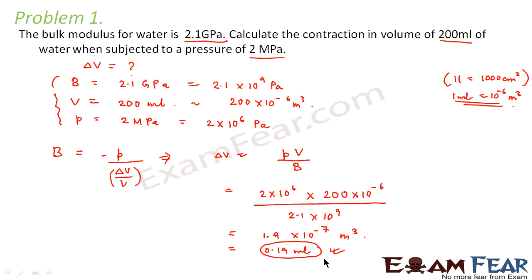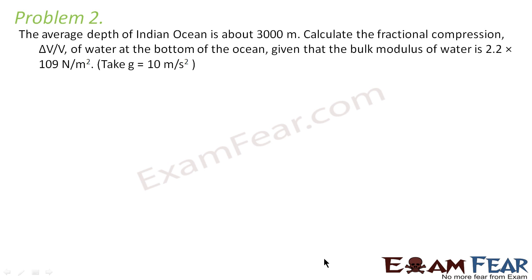You should have basic knowledge of unit conversion — for example, how gigapascal relates to pascal, how megapascal relates to pascal, and how to convert liters to meter cube. The second problem says: the average depth of the Indian Ocean is about 3000 meters. Calculate the fractional compression ΔV/V of water at the bottom of the ocean, given that the bulk modulus of water is 2.2 × 10⁹ newton per meter square.